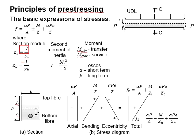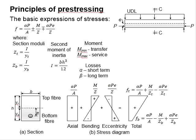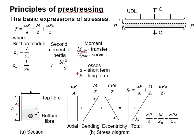The term I here represents the second moment of inertia of the cross-section. The factor alpha represents the factor for losses — it can be in the form of alpha or beta. Alpha refers to short-term losses, while beta refers to long-term losses.